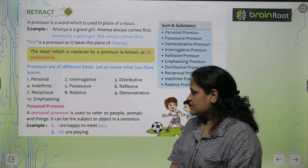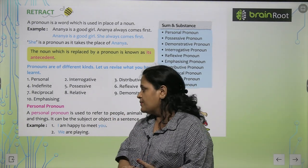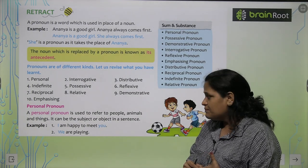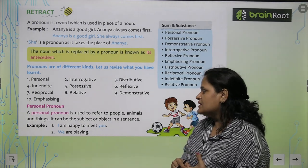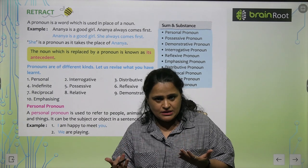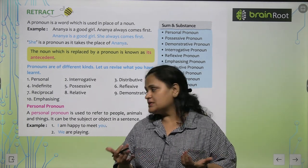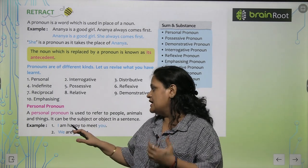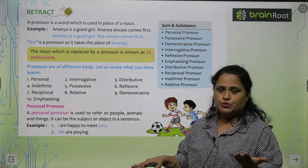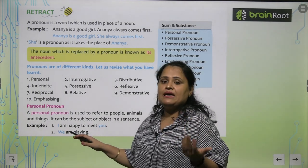So first we quickly start with personal pronoun. A personal pronoun is used to refer to people, animals, and things. It can be a subject or object in a sentence. For example: 'I am happy to meet you.' 'We are playing.'